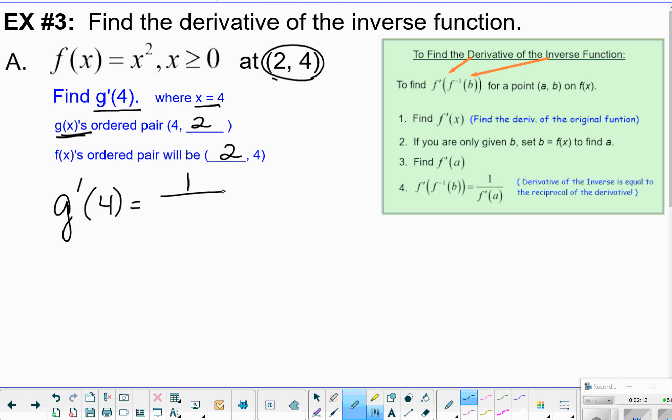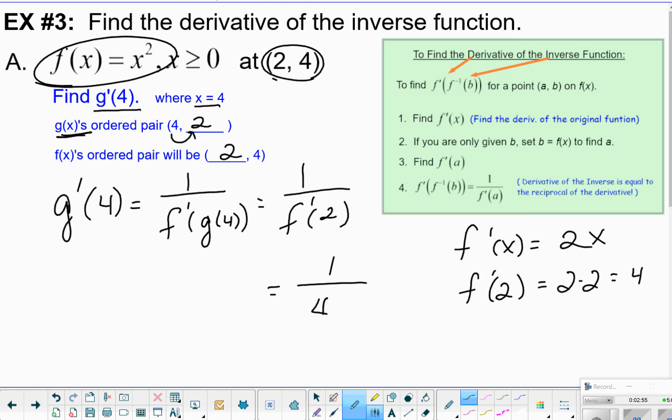And I want to find g prime of 4. That's going to be like evaluating 1 over f prime of 2. You know what? Let me write that just a bit different. That's going to be like finding f prime of g of 4, which is like f prime. Well, if I put in 4 to g, I get out 2. So it's going to be like finding f prime of 2. Off to the side, let's go find f prime of x. Well, f of x is equal to x squared, so this would be 2x. And now I need to evaluate f prime at 2, so I get 2 times 2 is 4.